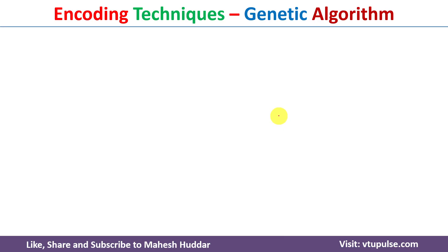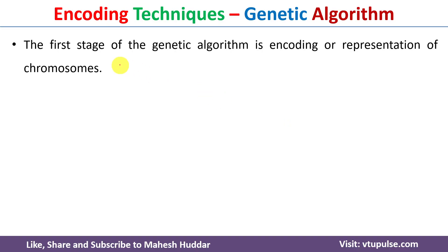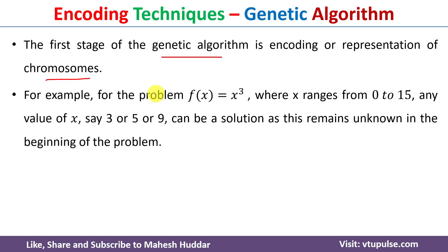The link for those videos is given in the description below. First we will understand what is encoding technique in genetic algorithm. Encoding technique is the first stage of genetic algorithm where we need to encode or represent the chromosomes. Let us take an example — let us say that we want to maximize the function f(x) = x³, where the value of x will be in the range of 0 to 15.